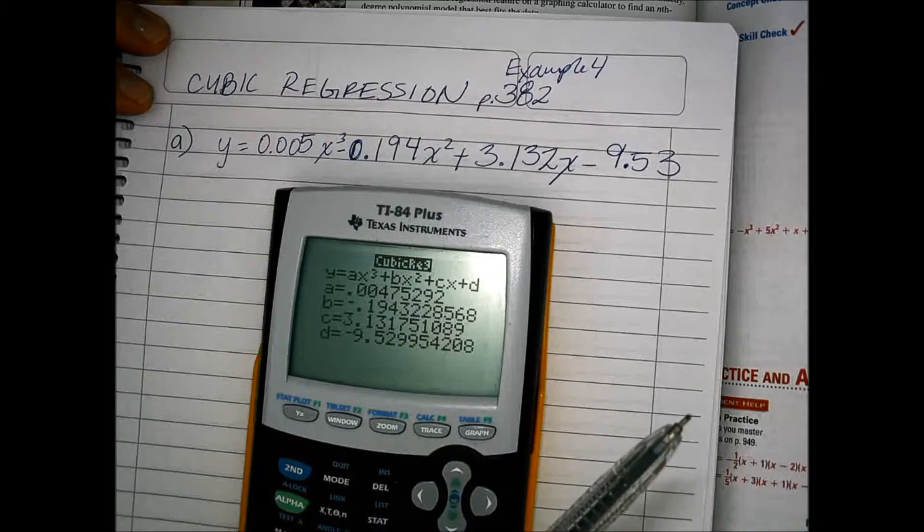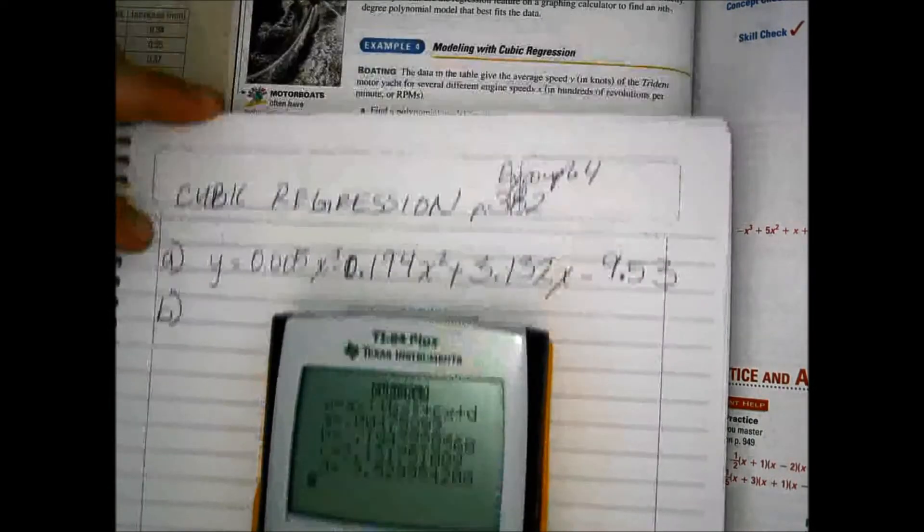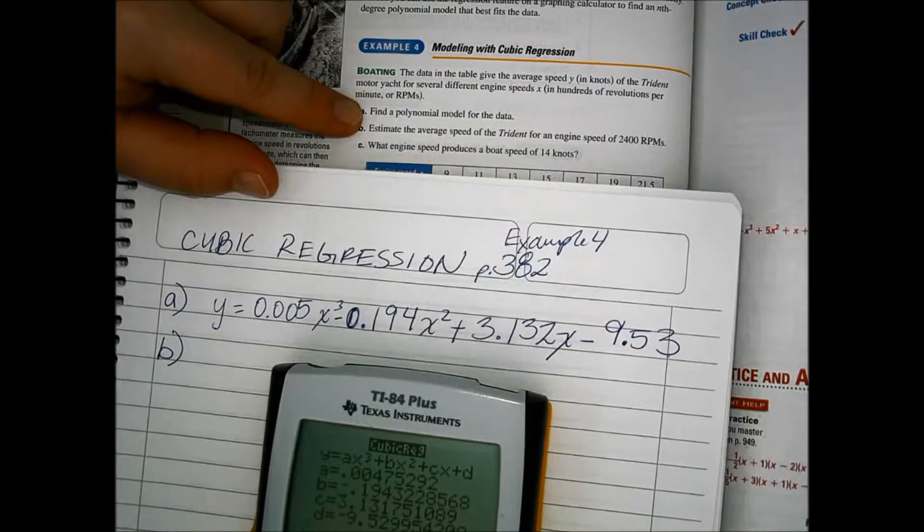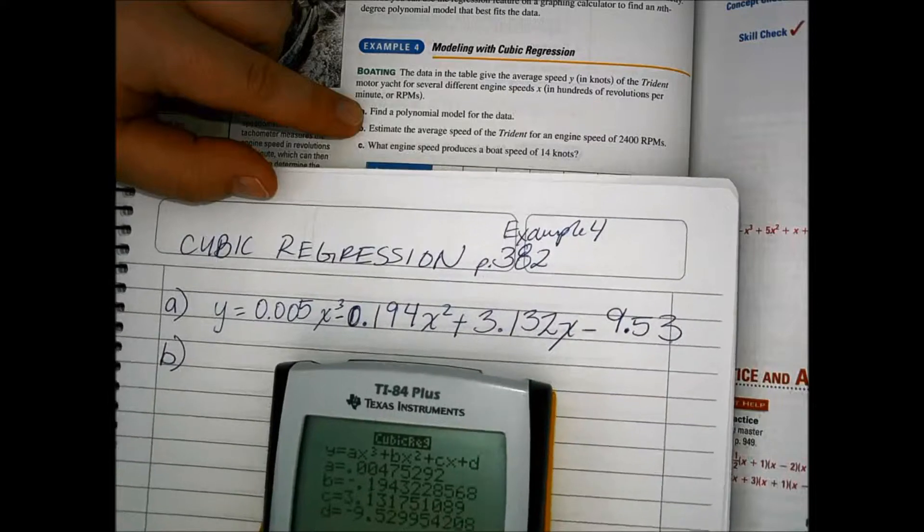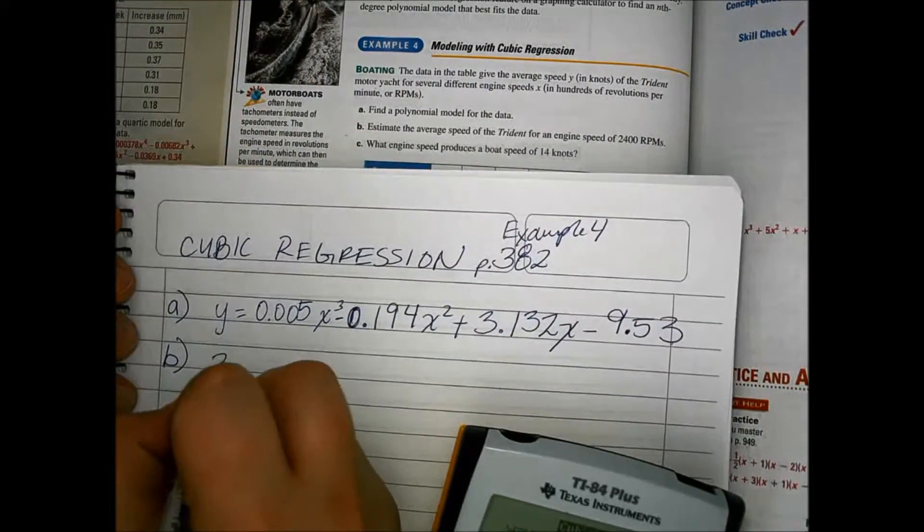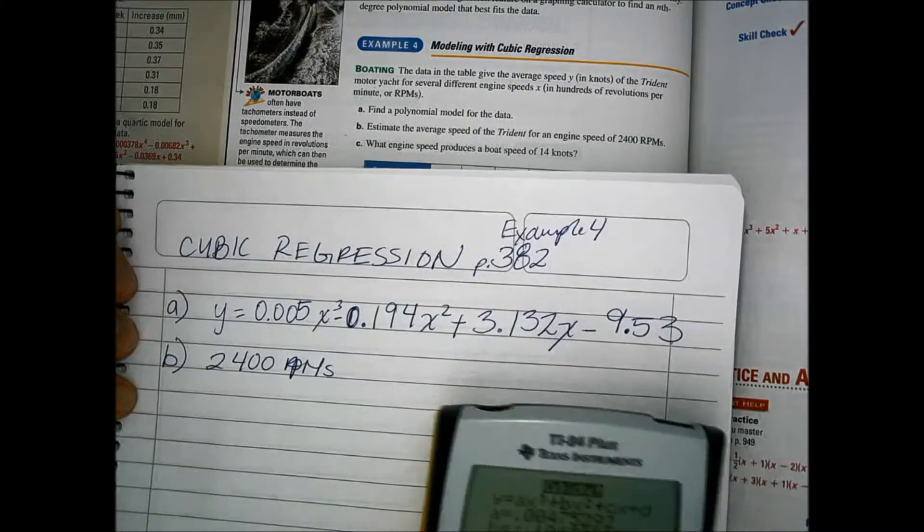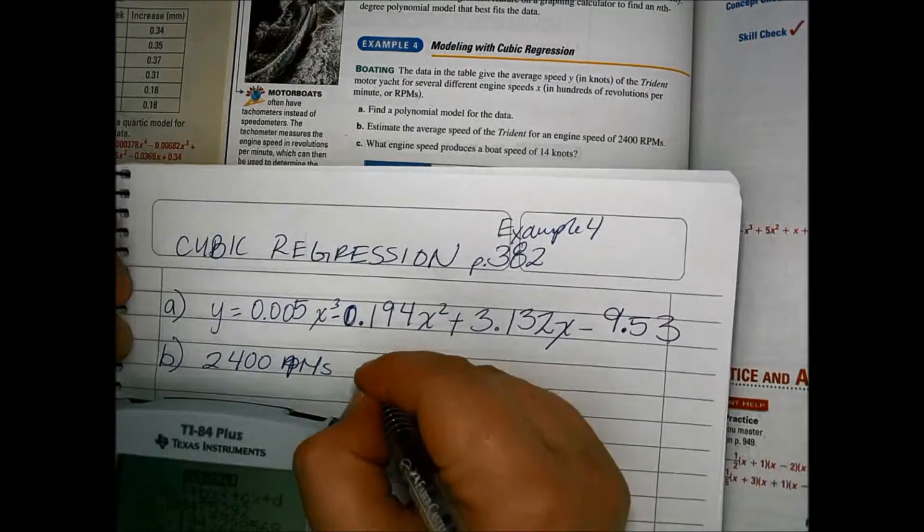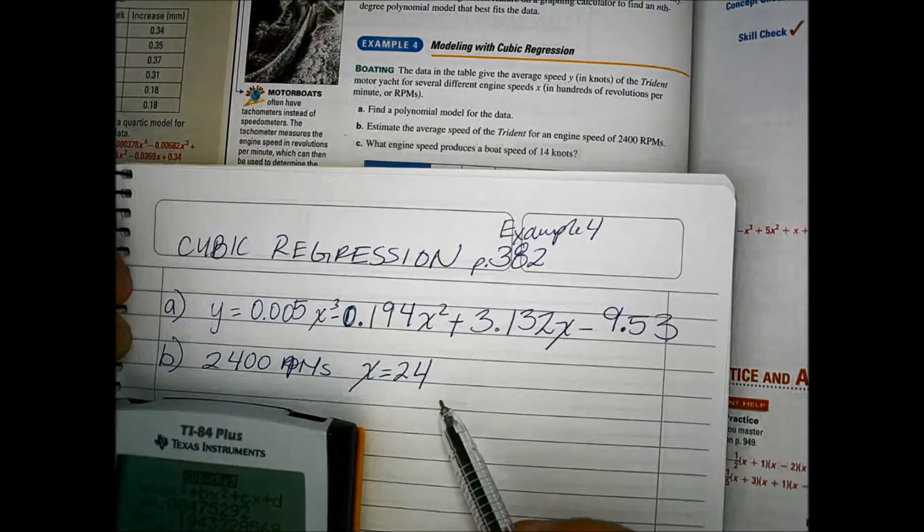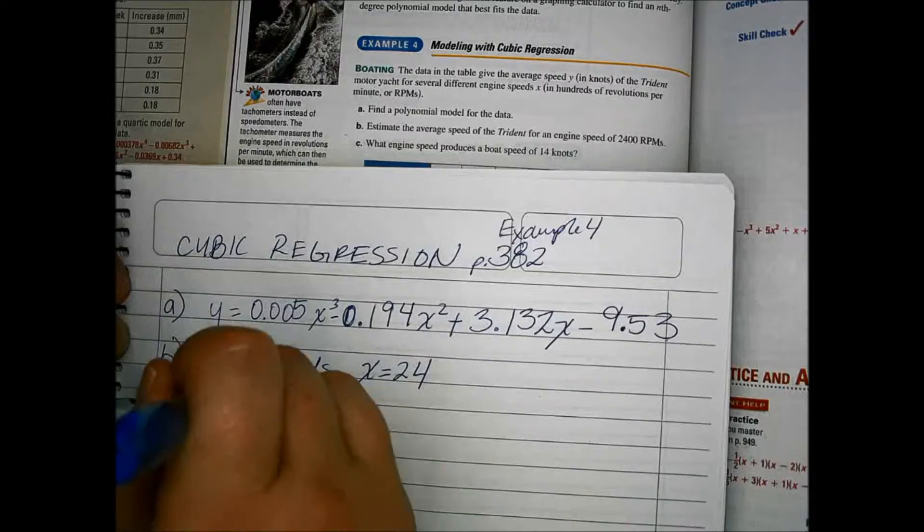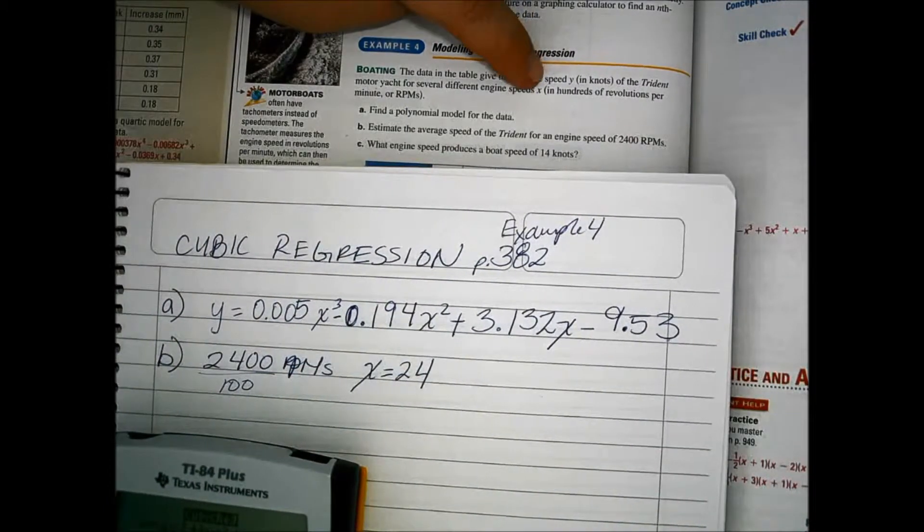Now let's use our polynomial to finish parts B and C. So in part B, we need to estimate the average speed of the trident for an engine speed of 2,400 RPMs. So 2,400 RPMs in our values for our input, that represents a value of 24 in our input.